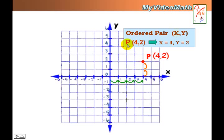There's a point P at the position 4 and 2. That means the x-coordinate is 4, the y-coordinate is 2. 1, 2, 3, 4 for x, and 1, 2 for y. That's where they meet.